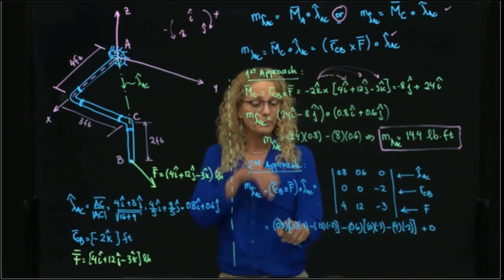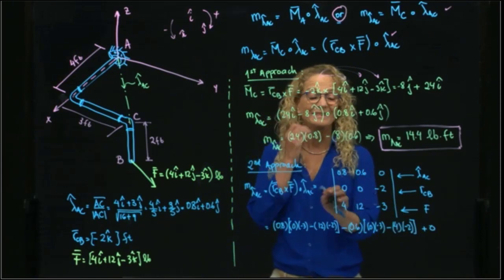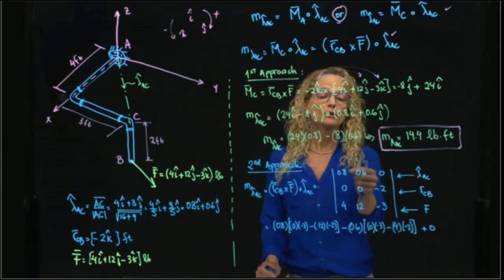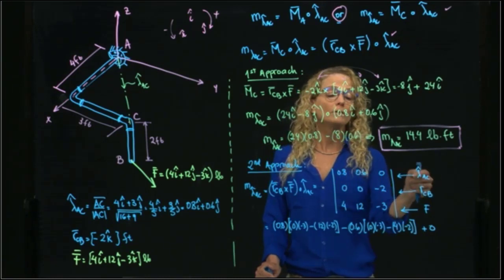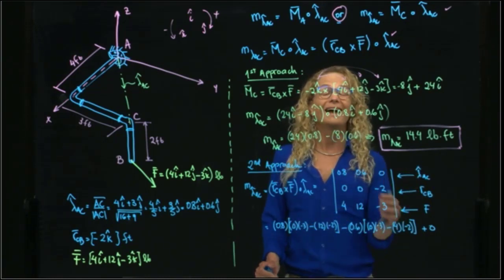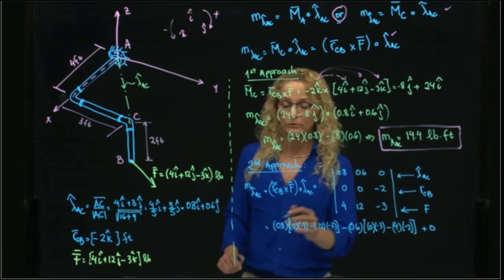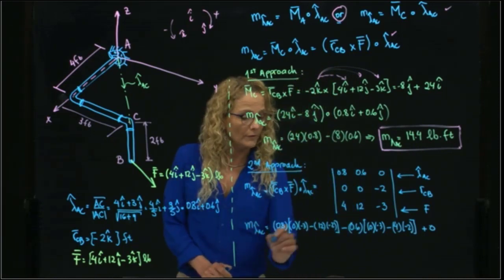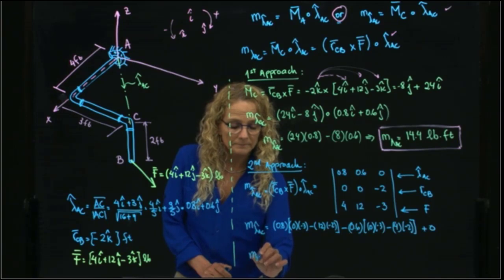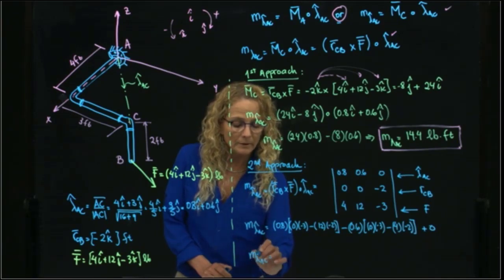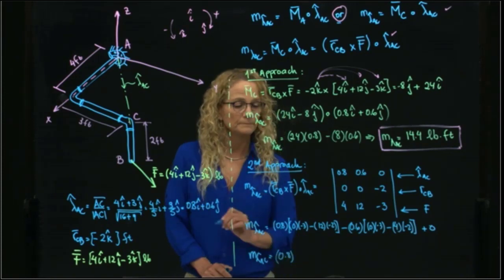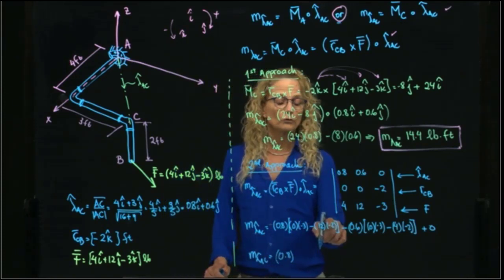So if I do that, that will be equal to 0.8 times... 12 times 2 is 24... and negative times negative gives me positive. And then I have 0.6, and this gives me a positive quantity.